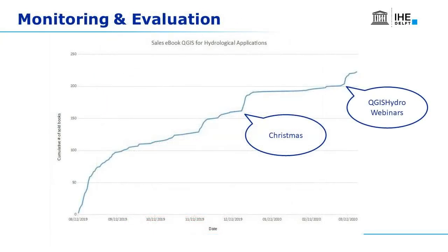Monitoring and evaluation is very important because you want to achieve impact. You want to see that people learn from your content, know who they are and their backgrounds, and see how it impacts the sales of your courses or other products like books. For the QGIS Hydro webinars, we can see a graph of book sales showing that the webinars increased sales — a jump almost as big as Christmas sales.